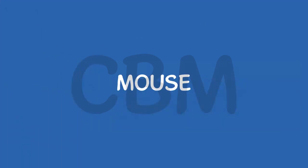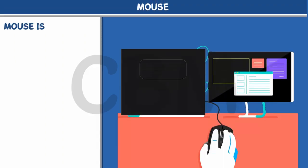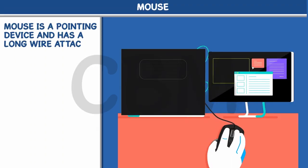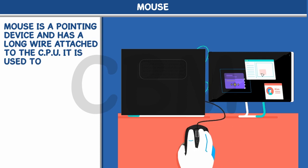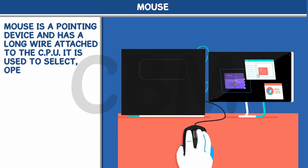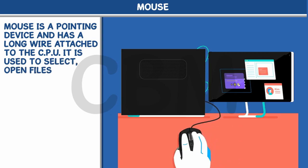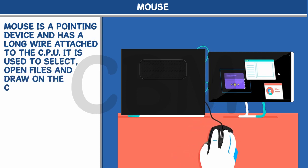Mouse. Mouse is a pointing device and has a long wire attached to the CPU. It is used to select, open files and draw on the computer.